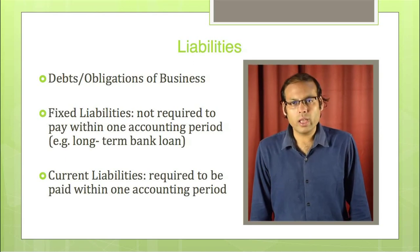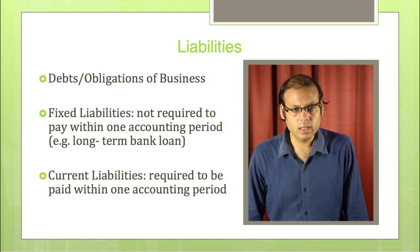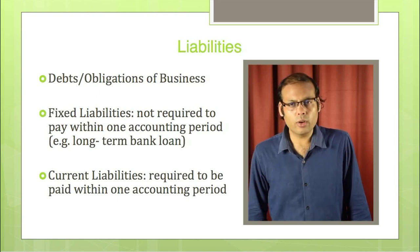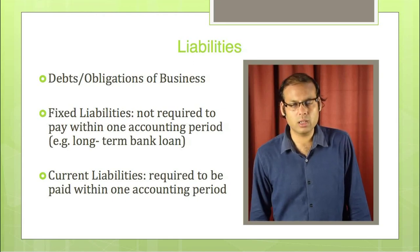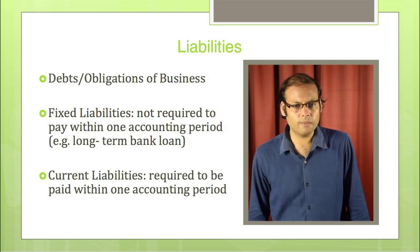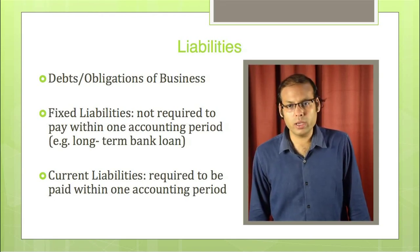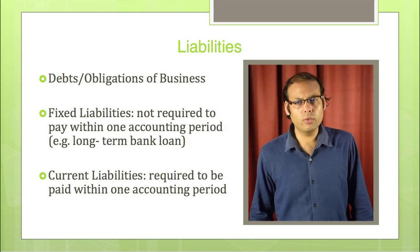Liabilities are just opposite to assets. Assets are resources, whereas liabilities are debts and obligations of the business — meaning the business has to pay them or return them. If you have taken a loan from a bank for your business, then you have to return it; that is the liability of the business. We can classify liabilities as fixed liabilities and current liabilities. Fixed liabilities are not required to be paid within one accounting period — that is a long-term bank loan, not required to be paid within one year. The loan may be for 5 years, 7 years, etc., for a comparatively longer period of time.